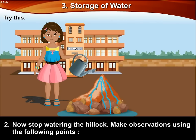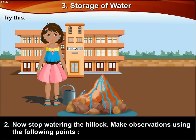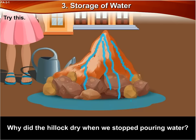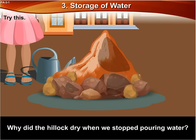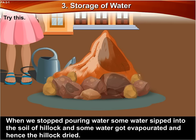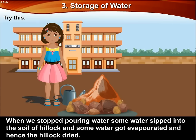Now stop watering the hillock. Make observations using the following points. Why did the hillock dry when we stopped pouring water? When we stopped pouring water, some water seeped into the soil of the hillock and some water got evaporated, and hence the hillock dried.